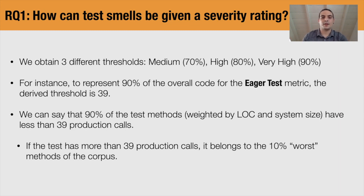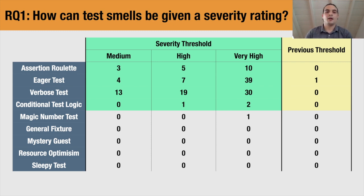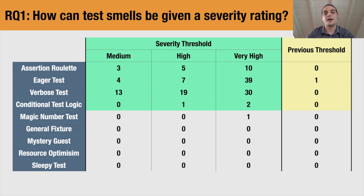Now let's have a look at the results. These are the new thresholds. As you can see, we have medium, high, and very high risk categories. The last column shows the thresholds that were previously used — they are almost all set to zero, so even having one instance is a red flag. The only exception is eager test, for which the threshold was one. With our new thresholds, they are substantially different for four test smells, highlighted in green. For example, for eager test, if a test method contains fewer than four production calls, we do not mark it as smelly. For the other test smells not highlighted in green, the thresholds are still set to zero. These are rare smells — they happen so rarely in our corpus that it is not possible to set thresholds different than zero. This is a limitation of the current approach, and in the discussion section of the paper we propose alternative solutions.